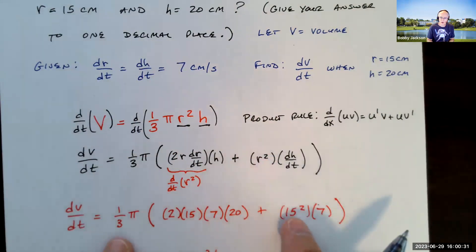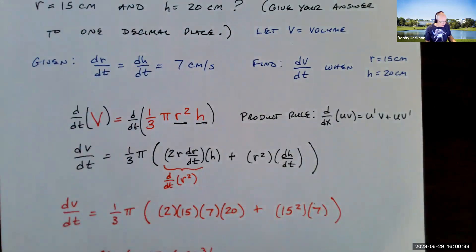Okay. So r is 15. Again, 15 squared. So I need to evaluate all that. And I have that in here. Let me pull that up.